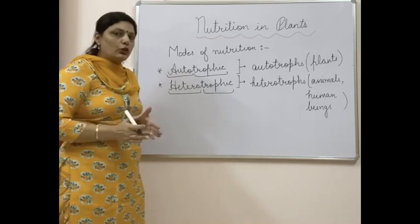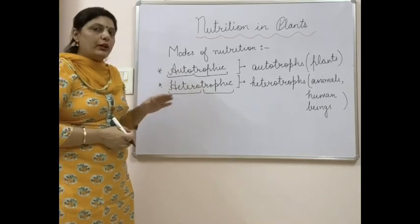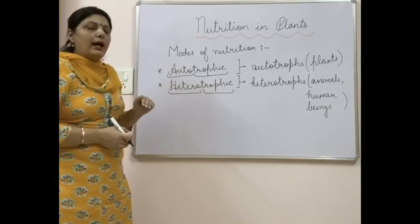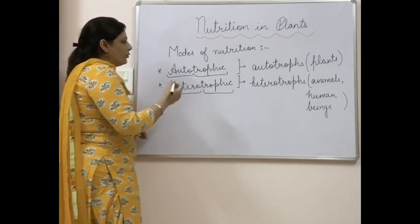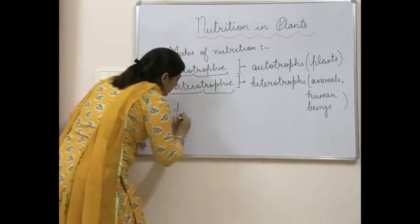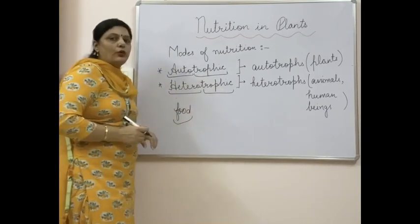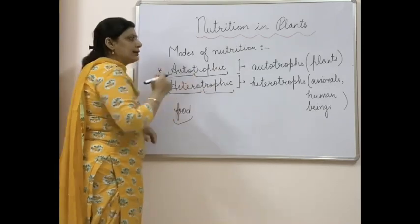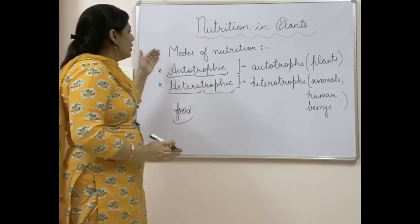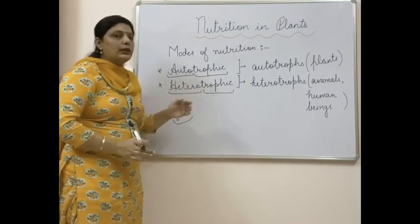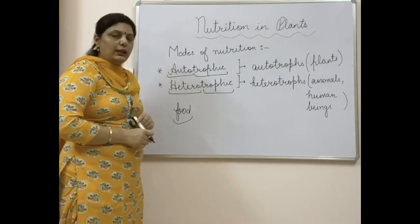There may be a question in your mind that human beings prepare their own food, like we prepare food in the kitchen. But that is not called the mode of nutrition — we are using already prepared material as ingredients and cooking the food, not synthesizing it. So we are not considered autotrophs; we are heterotrophs. Broadly, the two modes of nutrition are autotrophic and heterotrophic, which we will study in detail further in the chapter.